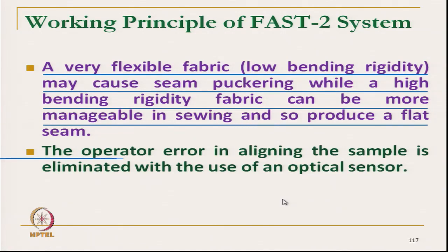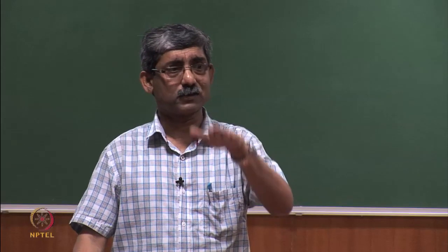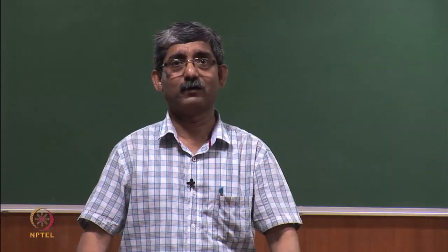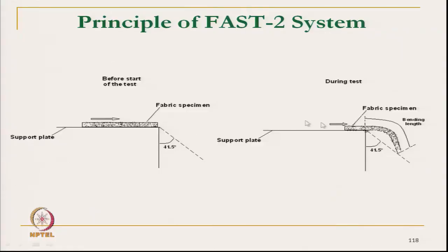In addition to tactile sensation, this instrument also gives the idea about the sewability of the fabric. The operator error in aligning the sample is eliminated using an optical sensor. This is the FAST 2 system — it is exactly the same as the Shirley bending stiffness tester. At 41.5 degrees angle, as soon as the fabric tip touches, this free length is the bending length.